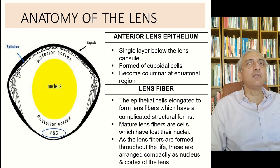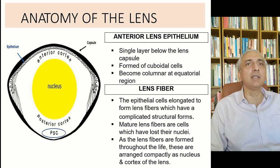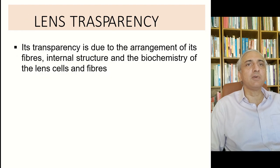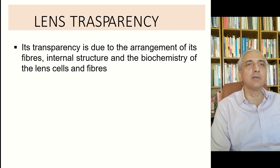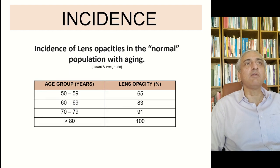The anterior lens epithelium is a single layer below the lens capsule, formed of cuboidal cells which become columnar at the equatorial region. They change shape into cuboidal and then in the center become lens fibers — cells elongated to form fibers with complicated structural forms. Mature lens fibers are cells which have lost their nuclei. These are arranged compactly as the nucleus and cortex of the lens.